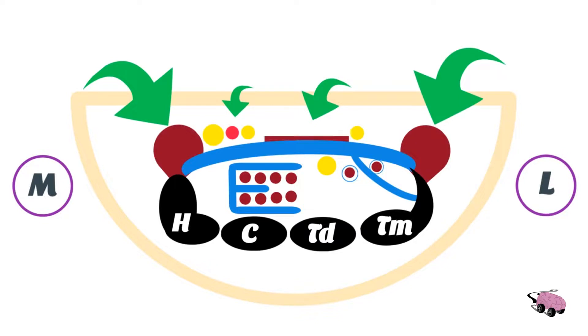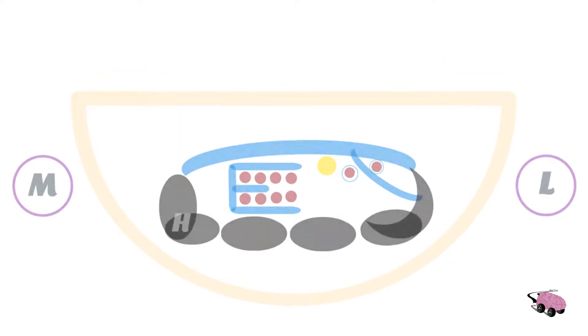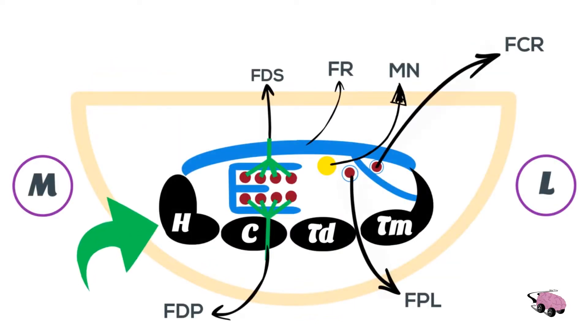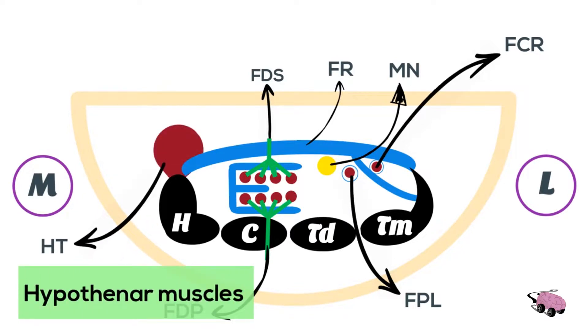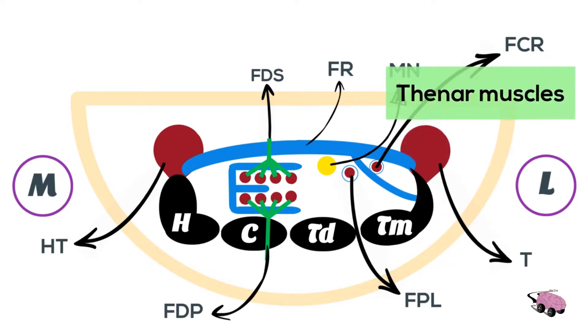But wait, there's more! Just for completeness, from the hamate bone, we have a collection of muscles called the hypothenar muscles. And just above the trapezium, we have a similar structure called the thenar muscles.